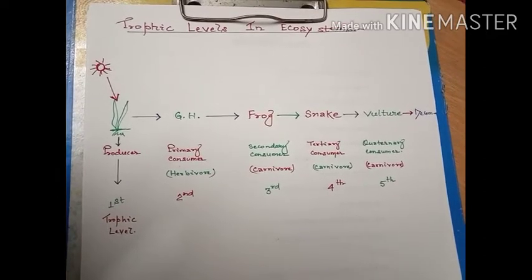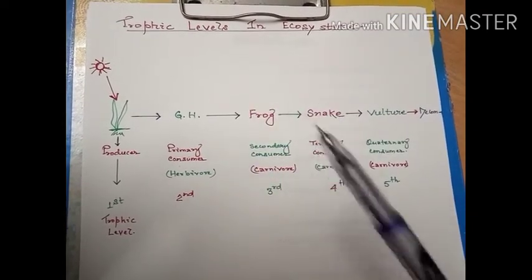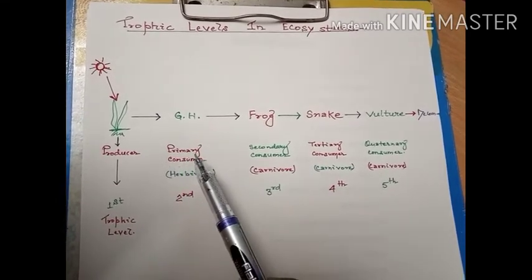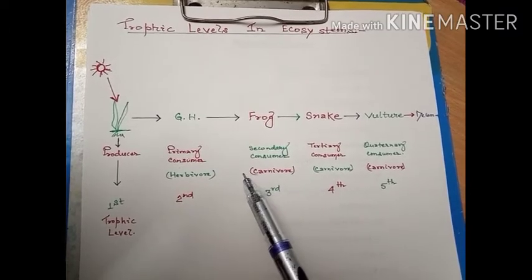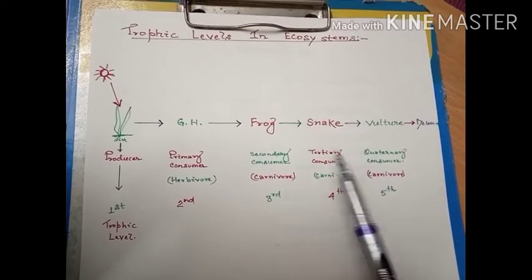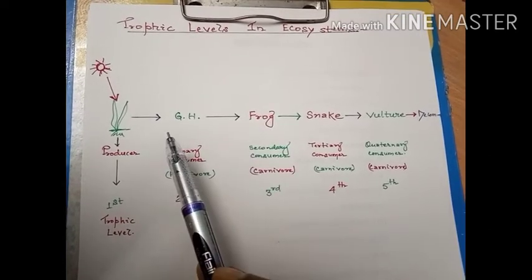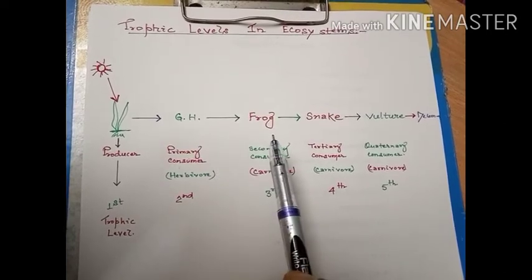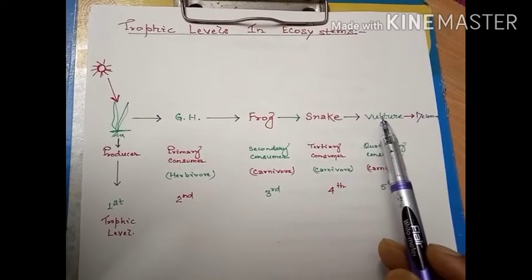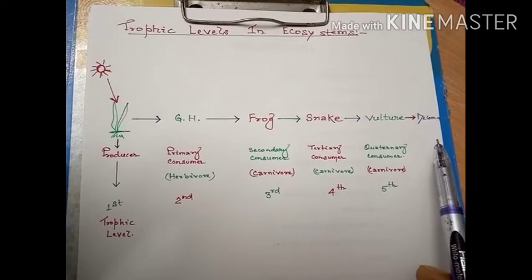Today we will discuss about the trophic levels in ecosystems. As we may observe, the ecosystem involves a cyclic path which is completed in various steps. For example, in the food chain we may observe the producer, primary consumer, secondary consumer, tertiary consumer, quaternary consumer, and at last the nutrients pass and are released through the decomposers again to the soil.